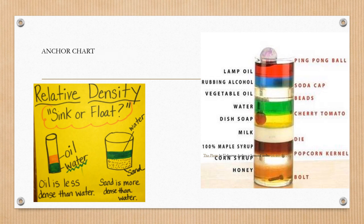To the right we have a density tower. Notice that the water is not the clear substance, it is the green substance. In this case, some substances that have lower density than water are ping pong ball, lamp oil, alcohol, soda cap, vegetable oil. I know they have lower density than water because they're on top of the water.